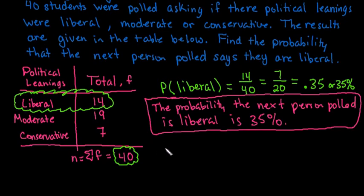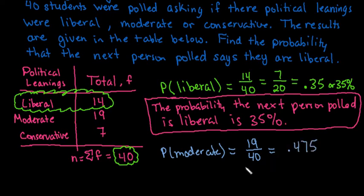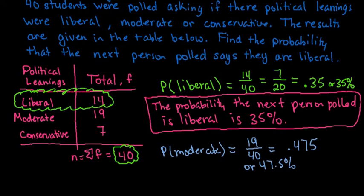We could also, just as easily find the probability of somebody responding moderate. So if we wanted to find if we were asked for moderate instead of liberal, we would just do the 19 over 40. Since this cannot reduce, I would leave it like this. And this ends up being 0.475 or 47.5%. And we could do the same thing for conservative.